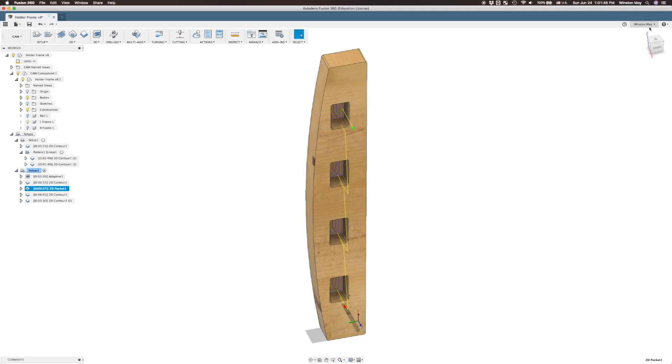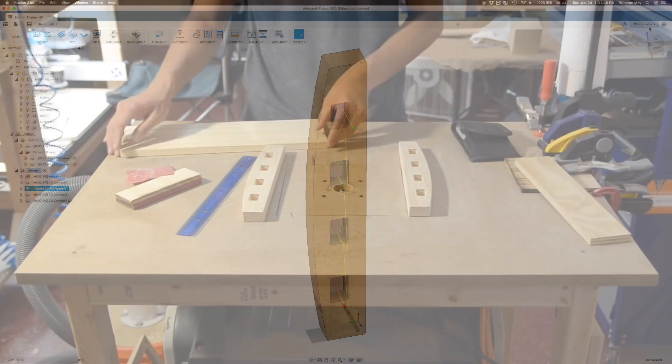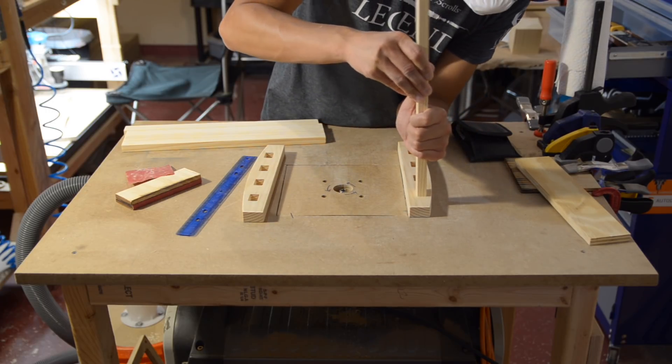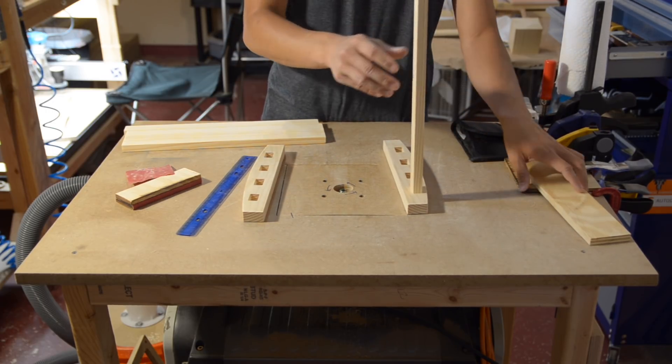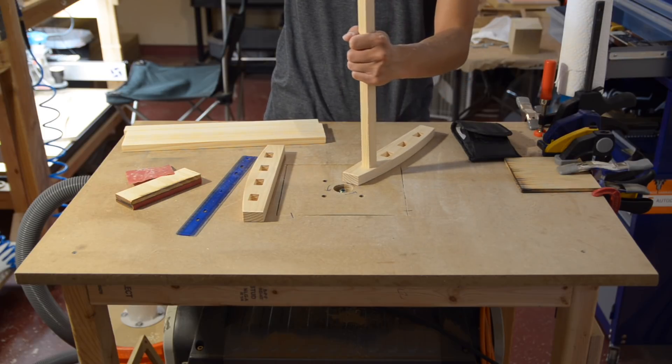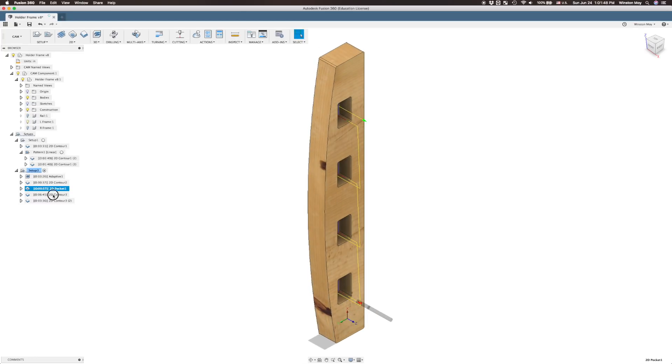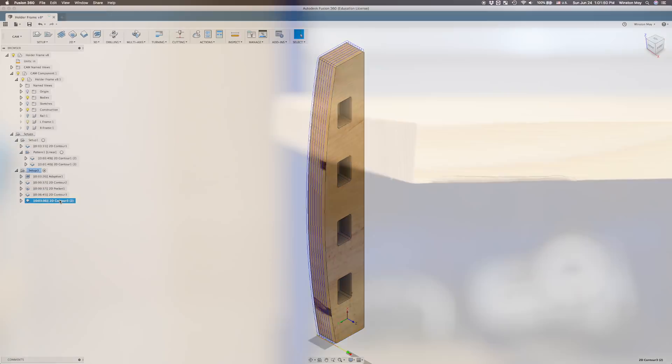One thing I didn't do the first time that I should have done was to apply negative stock to leave so that my slats would fit better. Internal features will almost always tend to be a little undersized because of backlash and deflection, and external features oversized, at least when climb cutting. More on that in a future video. But because of that fact, you need to widen this pocket by a couple extra thou to avoid an interference fit situation. Finally, to cut out this piece, we'll do a roughing and finishing contour.